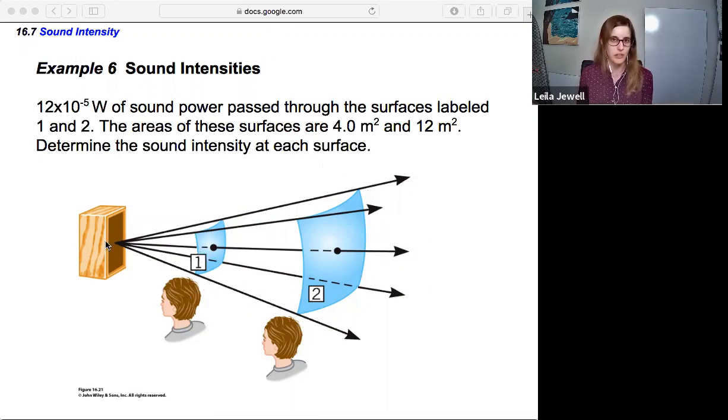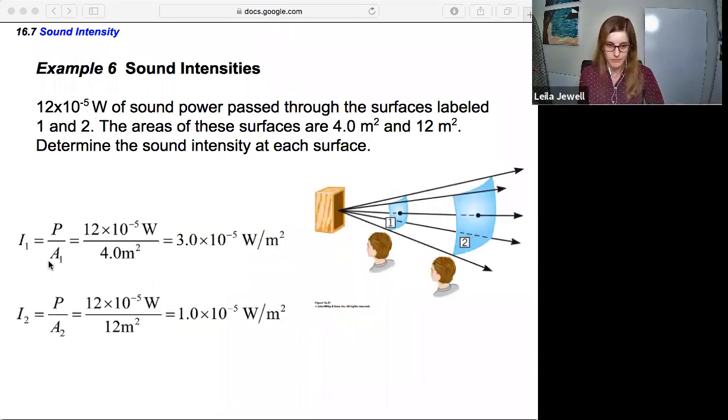Notice if you're closer, it's a smaller area. As you move further away, it's a larger area. Which do you think is more intense - closer to the speaker or further from the speaker? We'd expect if you're closer, it's going to be more intense. Let's check with a calculation. We have the areas and the power; we can use intensity equals power over area. So I₁ equals power divided by A₁, and it comes out to 3 times 10 to the minus fifth watts per square meter.